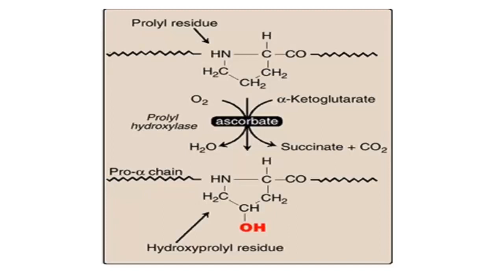This figure shows the alpha chain with the proline residue being post-translationally modified into hydroxyproline. The hydroxylation occurs at the C4 position of the pyrrolidine ring for proline hydroxylase, and at the C5 position for lysine hydroxylase. The proline residue present in the Y position of the pro-collagen is hydroxylated by prolyl hydroxylase to give the hydroxyproline residue.